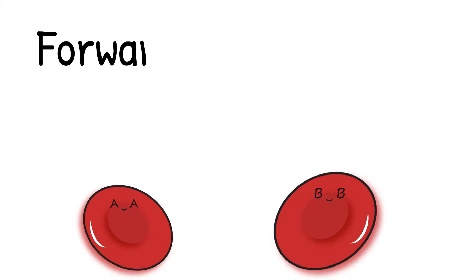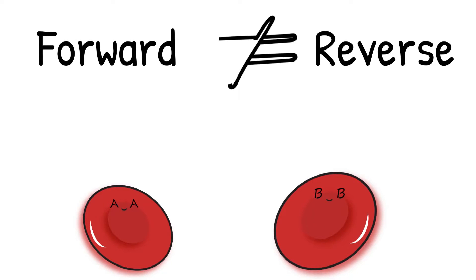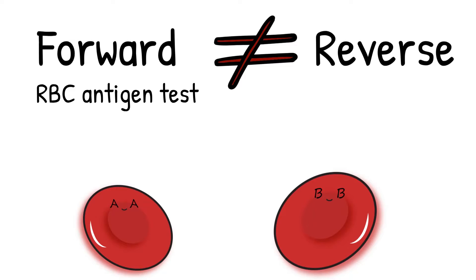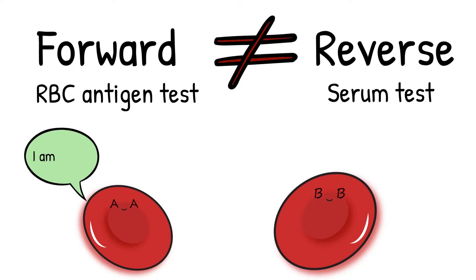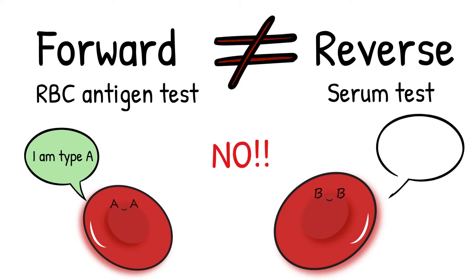In the previous weeks, we have been talking about ABO discrepancy. A discrepancy exists when the results of the forward and the reverse don't agree with one another. The patient blood type is not conclusive, so before we can assign a blood type to a patient, we have to solve this problem. Also, before we can give a type-specific blood to a patient, we have to solve the ABO discrepancy problem first, because we want to provide safe and compatible units for the patient.